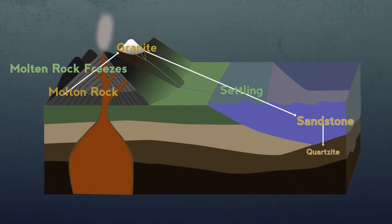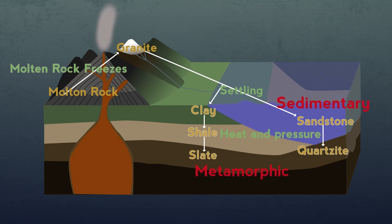From sandstone we get quartzite and from clay we get first shale then slate. Sedimentary and metamorphic rocks get weathered and eroded too.